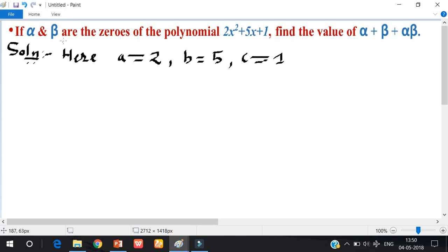So the formula: sum of zeros equals minus b by a. So minus 5 by 2 is alpha plus beta.